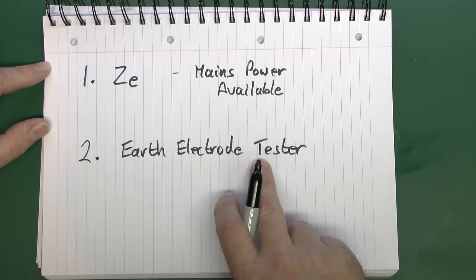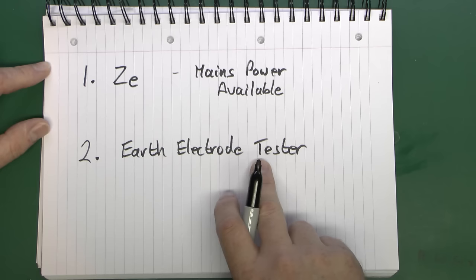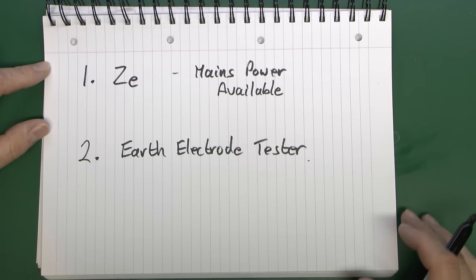This takes considerably longer and you do need the specific piece of test equipment to do it with. Now plenty of multi-function testers have this built in but certainly not all of them, so if you are going to be putting earth electrodes in on a fairly regular basis it's worthwhile to get one that does actually include this function.